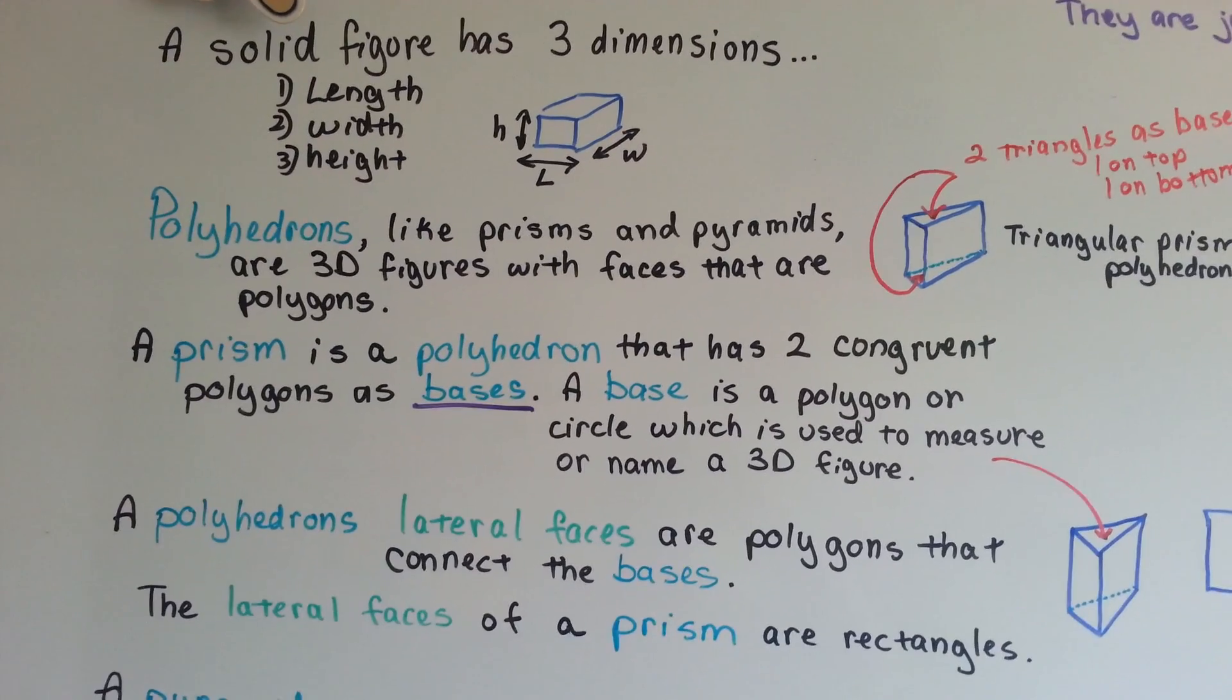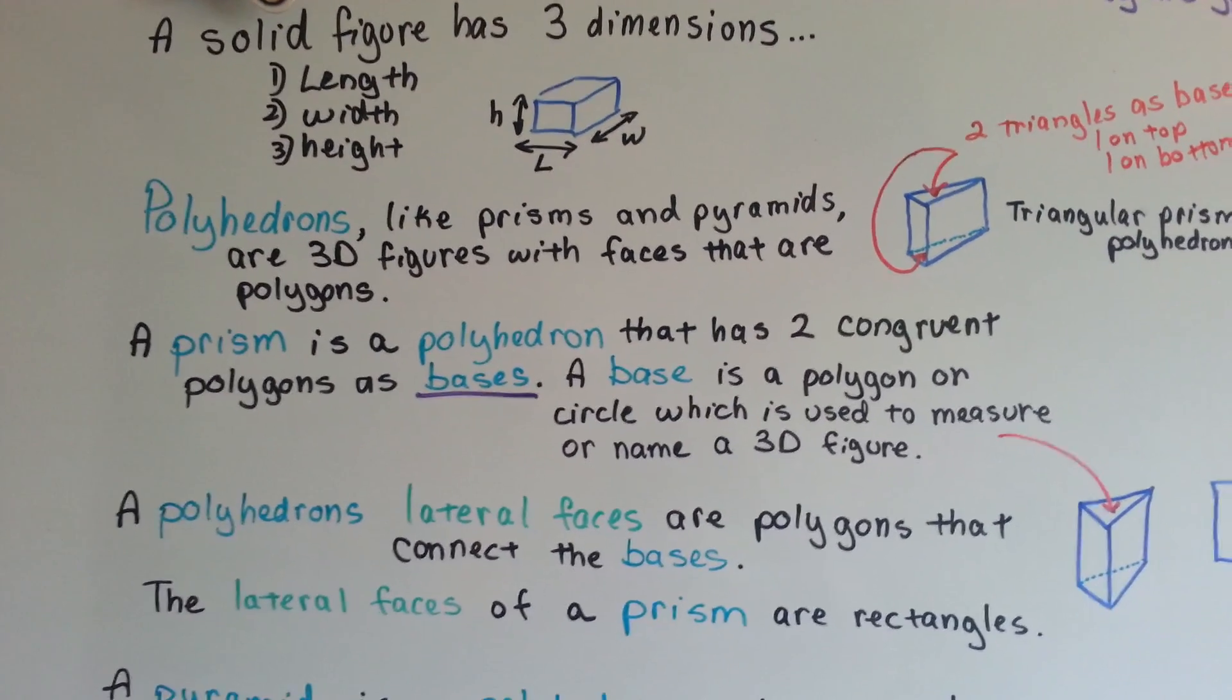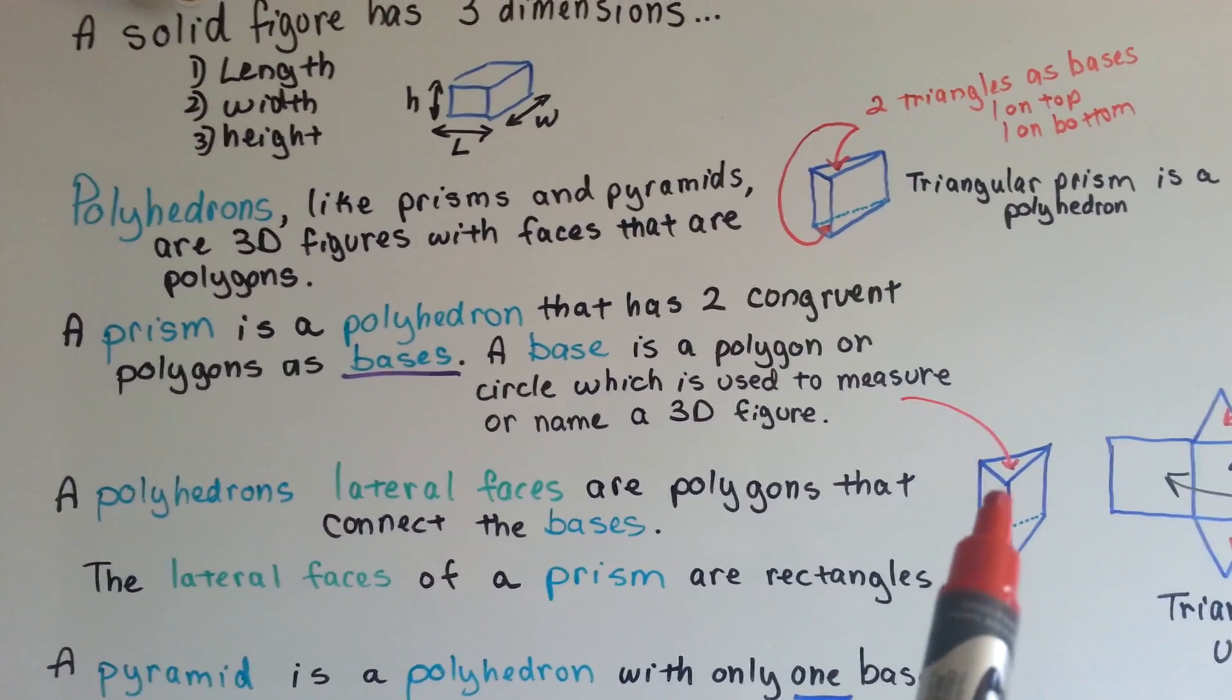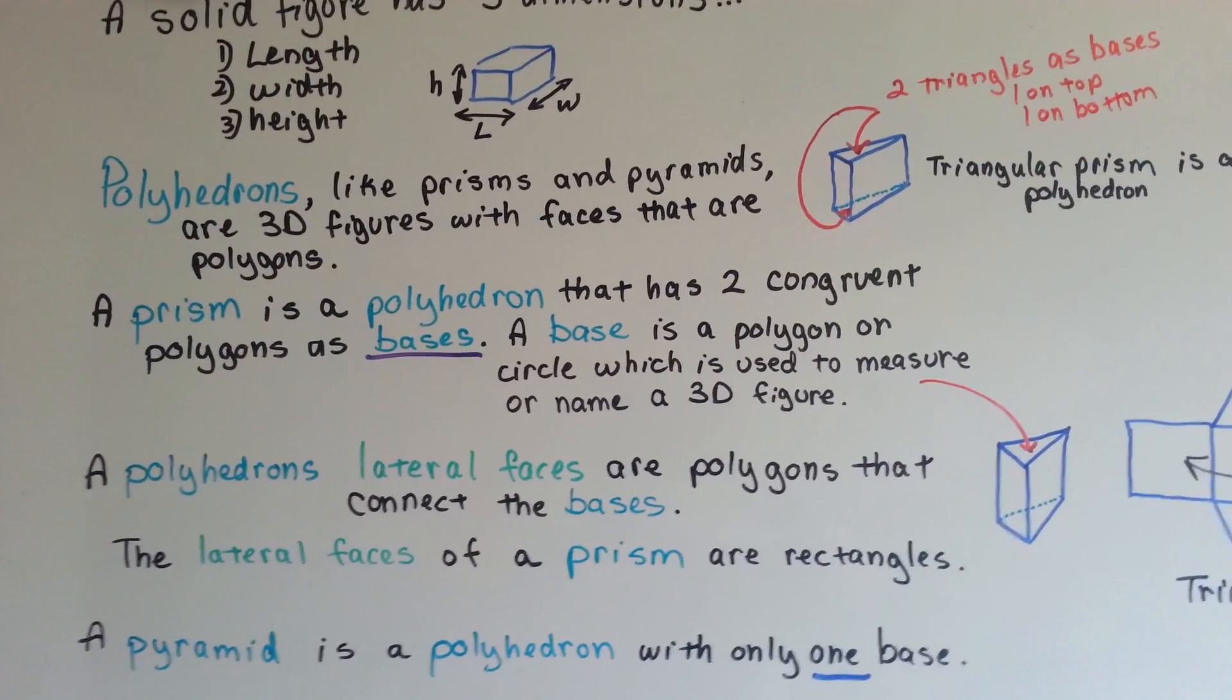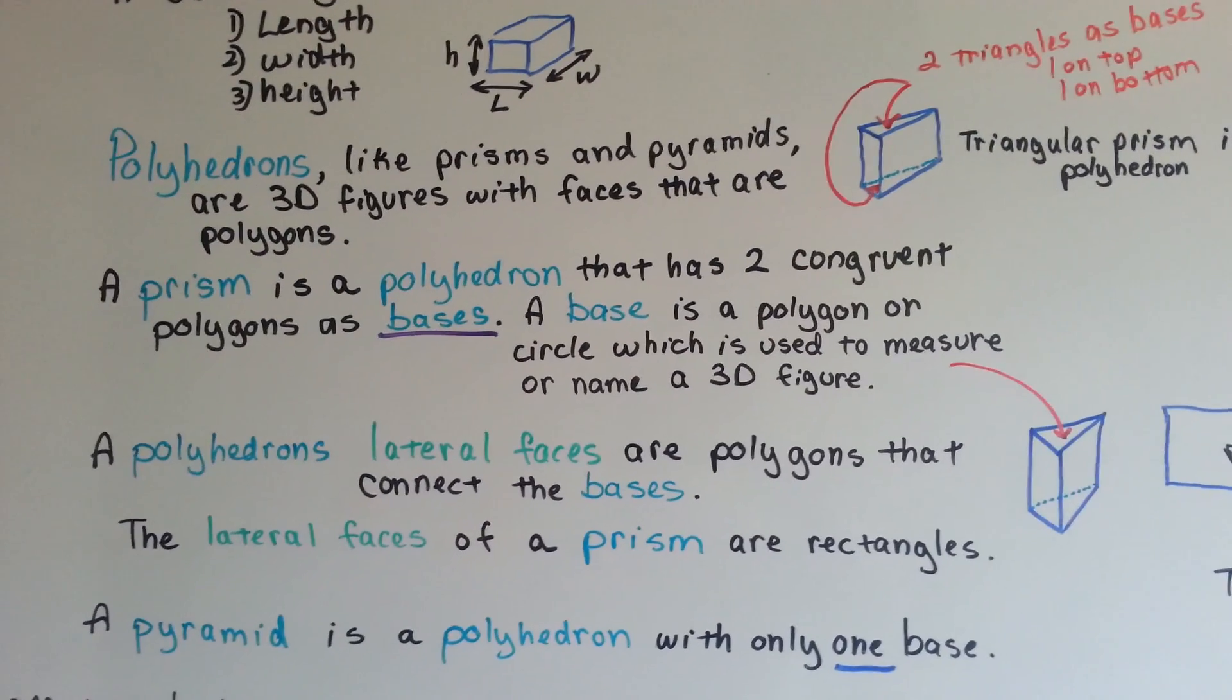A prism is a polyhedron that has two congruent polygons as its bases. The base is a polygon or circle which is used to measure or name the 3D figure. So whatever the base is, that's the name of the figure. If it's a triangle, then it's a triangular prism. If it's a square, it's a square prism.